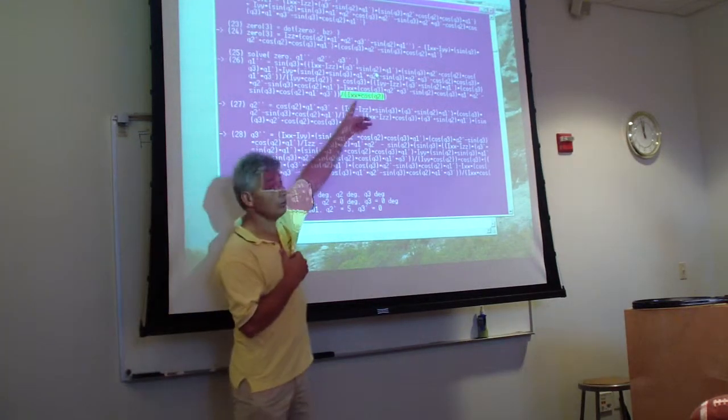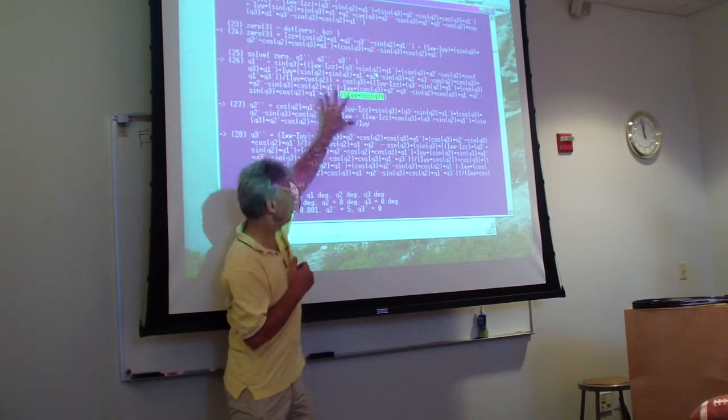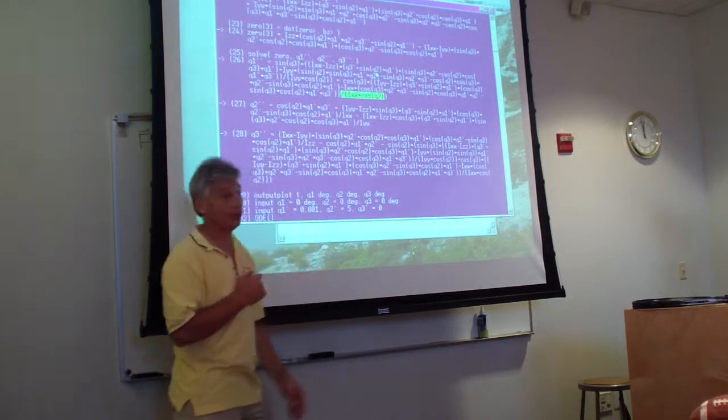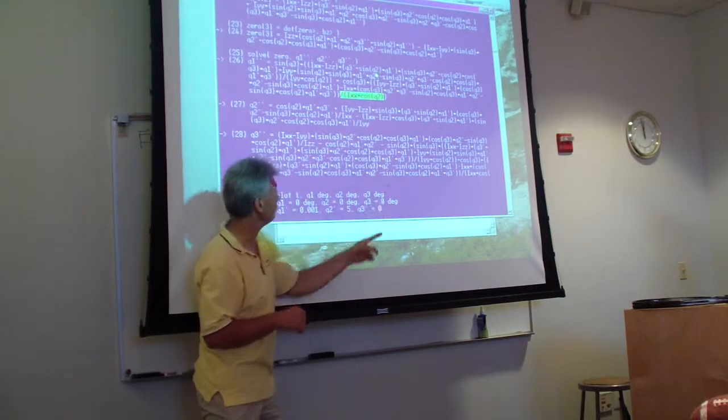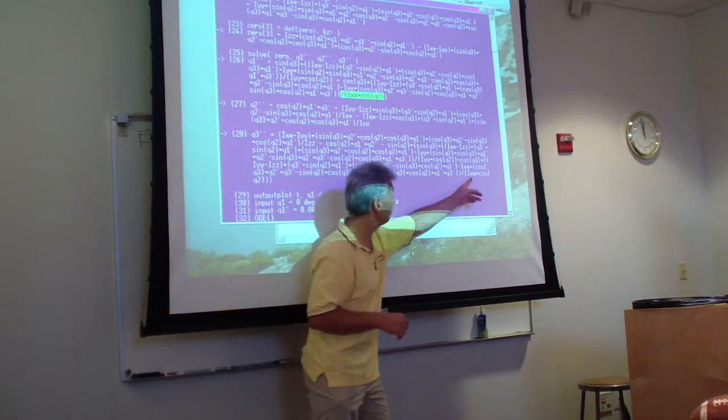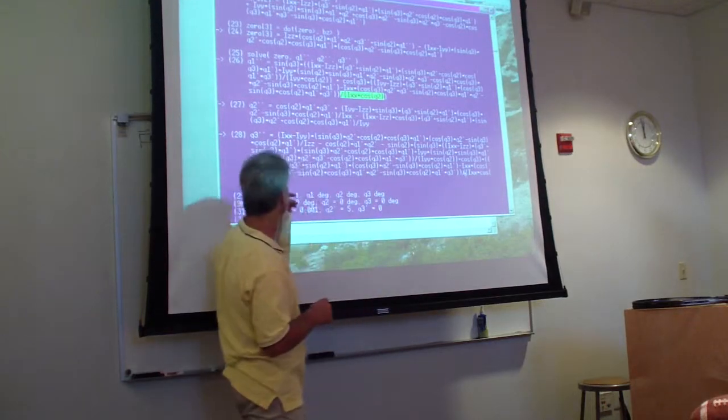So somehow we're paying this huge cost, and so the equations are bigger, and you're going to divide by zero error, which means these things don't actually work particularly well. Now, Q2 prime didn't have that problem, but Q3 prime did, you have Ixx cosine of Q2.